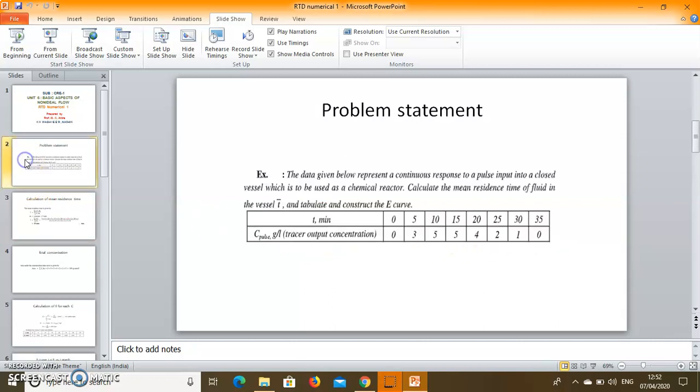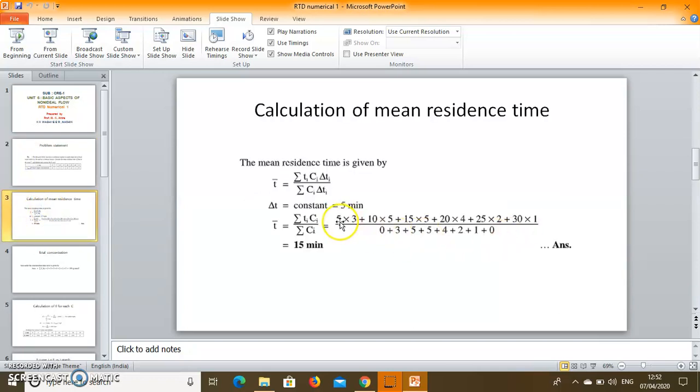So what we will do? We will multiply each T and C value, each T and C value. And we will have this formula of these numbers which we can substitute in the formula. So these numbers when we divide it will give the value 15.